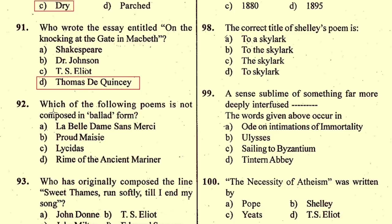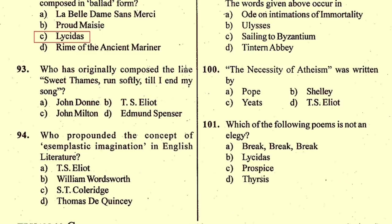Question number 92: Which of the following poems is not composed in villanelle form? The poem 'Lycidas' written by John Milton in 1637 as a pastoral elegy is not written in villanelle form, so the correct option is C. Question number 93: Who originally composed the line 'Sweet Thames run softly till I end my song'? These lines are from the poem 'Prothalamion' by Edmund Spenser, so the right option is D, Edmund Spenser.